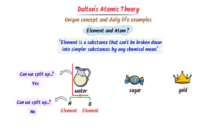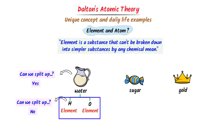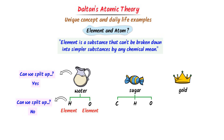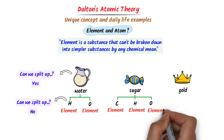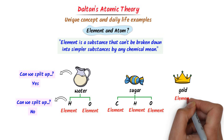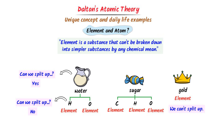Thus we learn that water is not an element because we can split it up into hydrogen and oxygen, while hydrogen and oxygen are both elements because they cannot be split up into something else. Similarly, sugar is not an element because we can split it up into carbon, hydrogen, and oxygen. But remember that carbon, hydrogen, and oxygen are all elements because we cannot split them up further. Now what about gold? It is an element because we cannot split gold into something else. Hence, this is the basic concept of element.